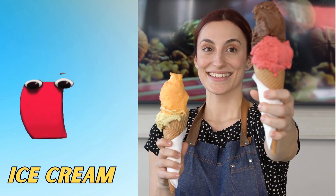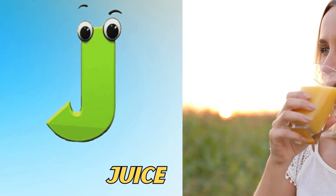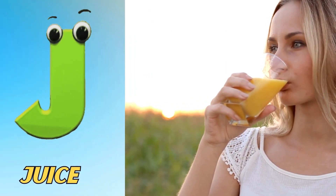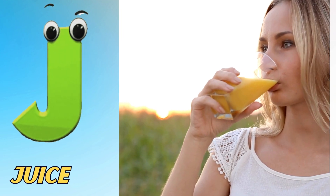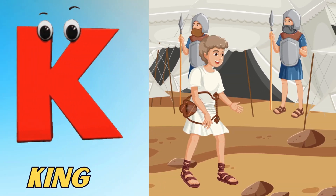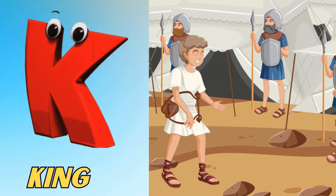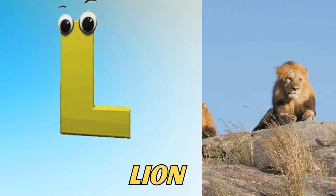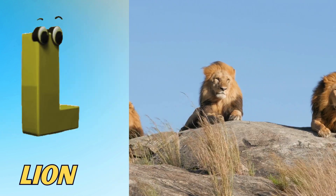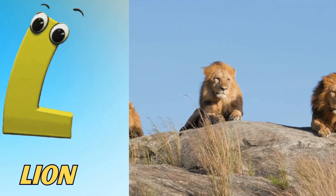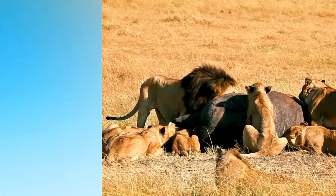I is for ice cream, i-i-ice cream. J is for juice, j-j-juice. K is for king, k-k-king. L is for lion, l-l-lion.